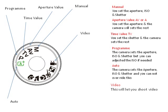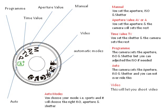The first major icon is the picture of the head, and that's basically portrait. All that's doing is choosing the best aperture, which will give you the smallest depth of field, along with the ISO and the shutter.